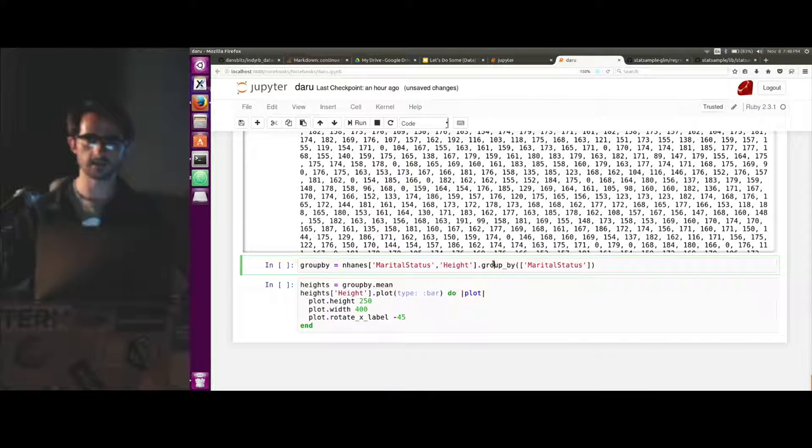Group by is something that is fairly powerful. If you've seen pandas, then this should be familiar. But so we subset to the columns we care about and we call group by and pass in marital status.